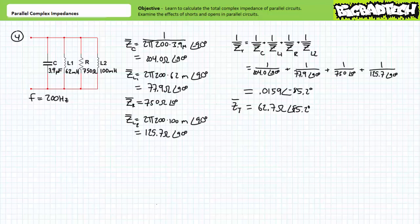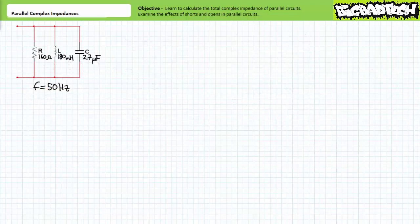Hopefully you did well on that example set. You may wish to rewind the lecture and correct any mistakes you may have made, because we are moving on. Let's close out this lecture with a quick discussion of shorts and opens inside parallel AC circuits. Recall from our earlier discussion on shorts and opens inside parallel DC circuits that shorts and opens can dramatically alter the total resistance of that parallel relationship. Parallel AC circuits behave no differently — only the terminology is subtly altered. Take the term resistance and swap it out for the term impedance and you get the picture. A short is a path with zero ohms impedance through which substantial current will flow, and no voltage will be dropped across a short.